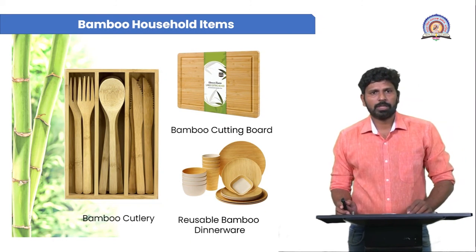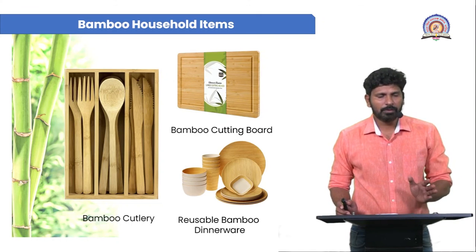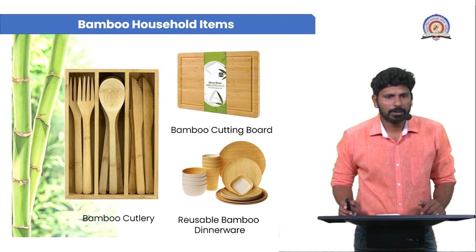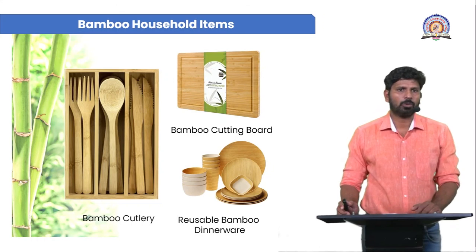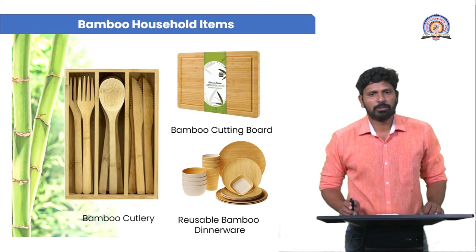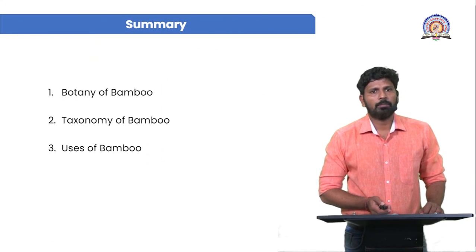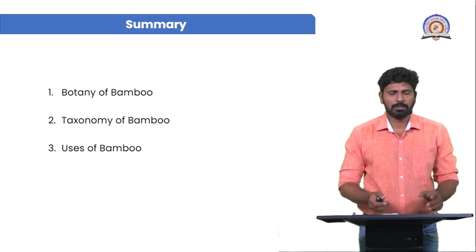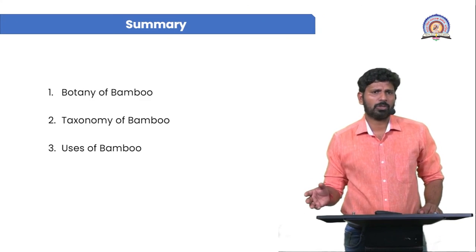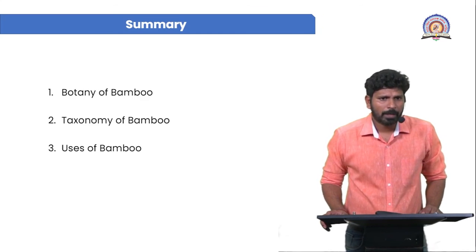Household items can also be prepared from bamboo — for example bamboo cutlery, which is very useful and attractive for the home. Bamboo cutting boards are also there, and reusable bamboo dinnerware can be prepared from bamboo. There are many more aspects of bamboo that we can use in day-to-day life.